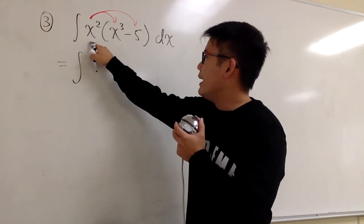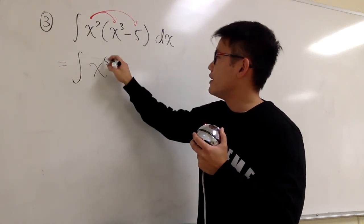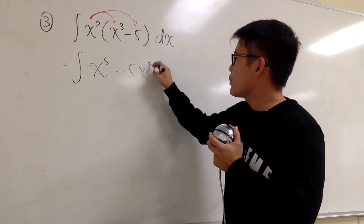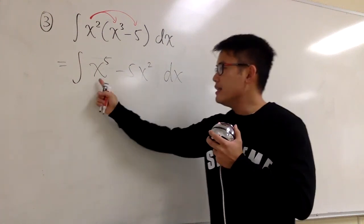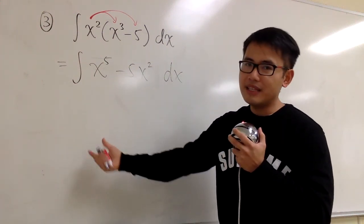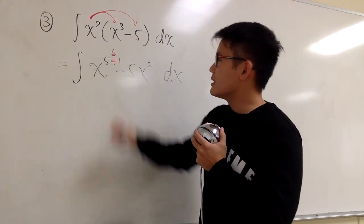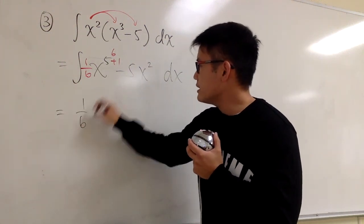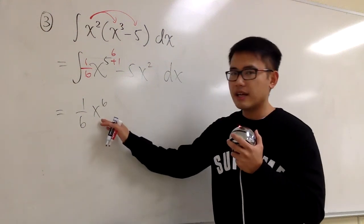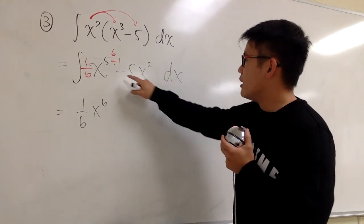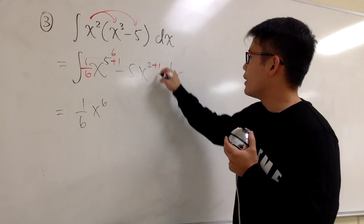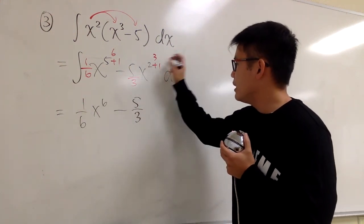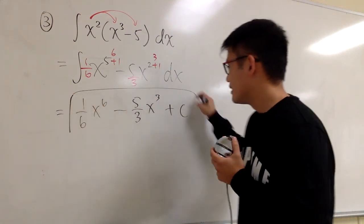We end up with the integral of x squared times x to the third power — which gives x to the fifth power — minus x squared times 5, which is 5x squared, dx. Now x to the fifth power is not affected by anything else. So we add 1: 5 plus 1 is 6, divide by 6, giving 1/6 x to the sixth power, or x to the sixth over 6. For the second term, we have negative 5x squared: add 1 to get exponent 3, divide by 3, giving minus 5/3 x to the third power. Add a plus c.